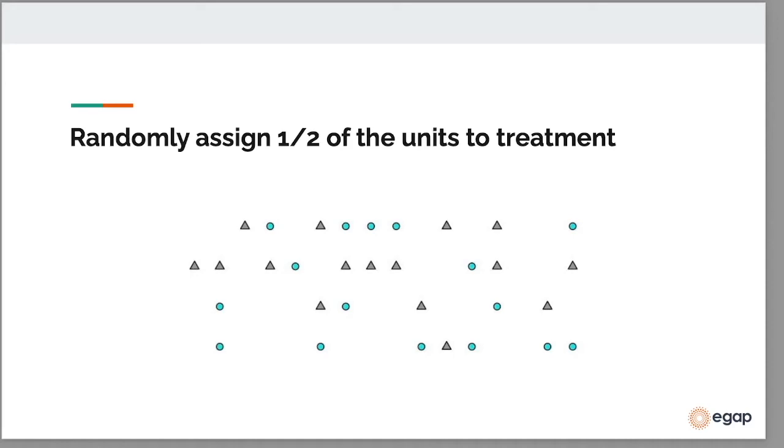In this particular example, we have two treatment conditions, treatment and control, and we set the probability to one half. The treated units are represented by gray triangles and the control units are represented by blue circles. These all started out as orange circles. But you can have more treatment conditions and different probabilities.